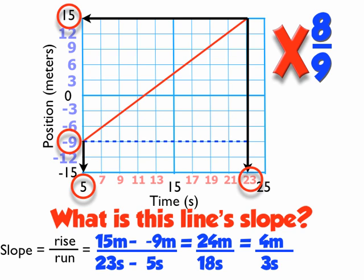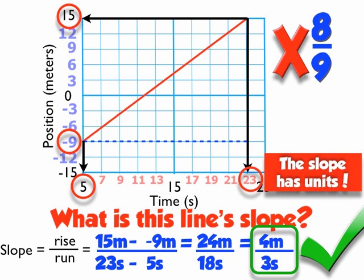That's the slope in this case. What's different about this from a math class, besides the units, is that each block has a value — and the slope itself has units. To calculate the units of the slope, it's the units in the vertical direction divided by the units in the horizontal direction, or units of the rise divided by units of the run.